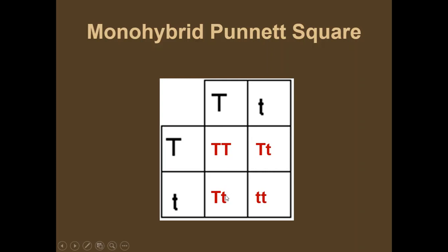What percentage would come out as big T, little t? Now remember, you've got two boxes that have these. So what percentage of the offspring would have that? Big T, little t? 50%. And then what if we were looking at only the ones that would have two little t's? What percentage of the offspring would have two little t's? 25% again.